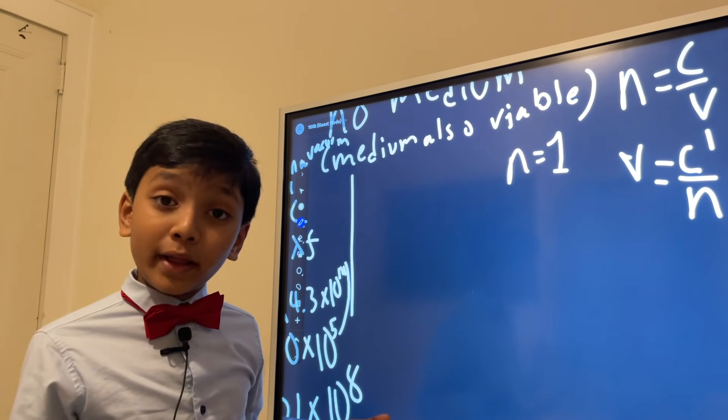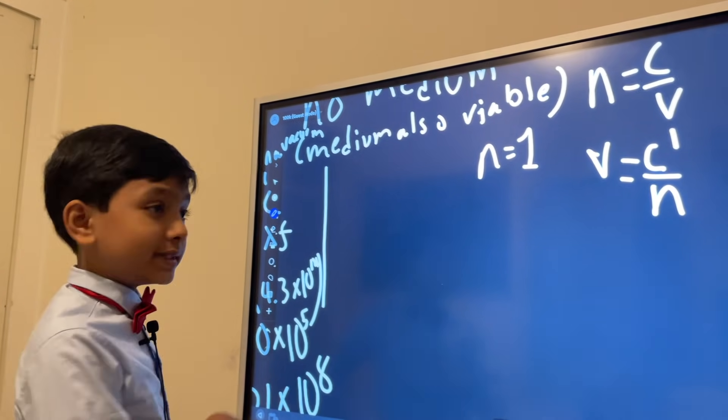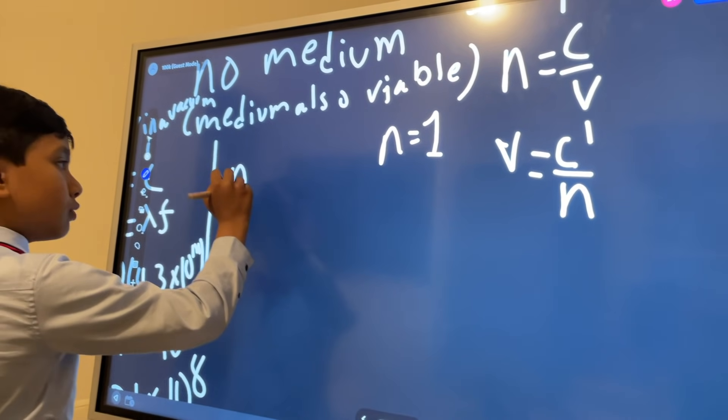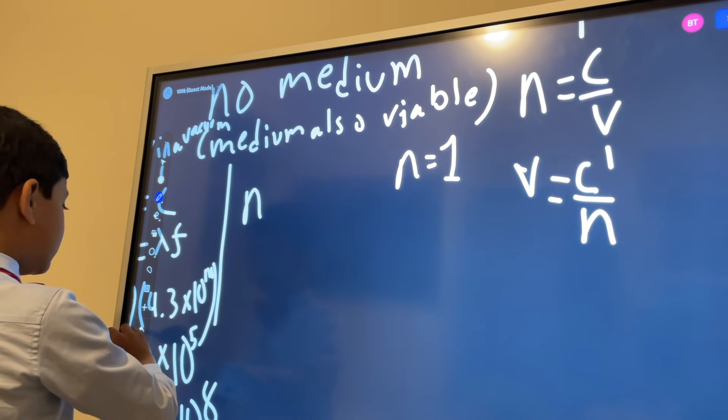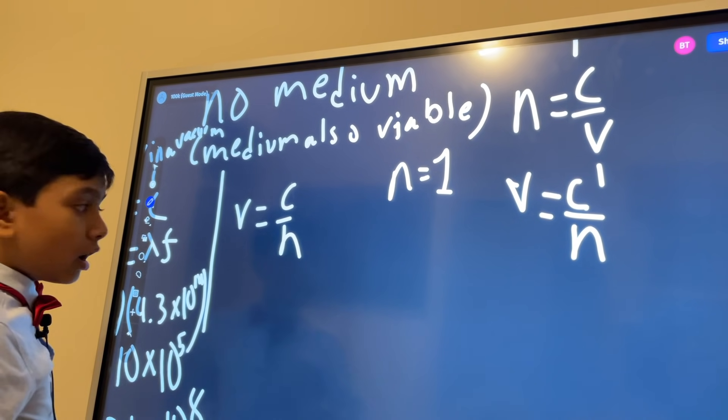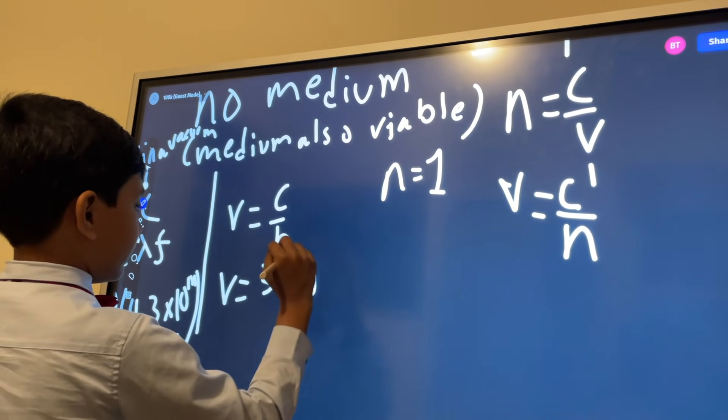But what about with a medium? Let's look at water for example. Since N is equal to C over V, oh actually you can say V is just C over N. And we know that C is, well, 3 times 10 to the 8. Let's estimate.